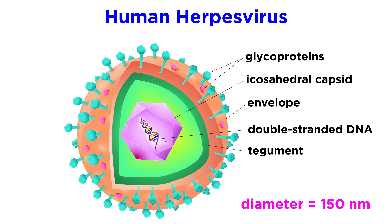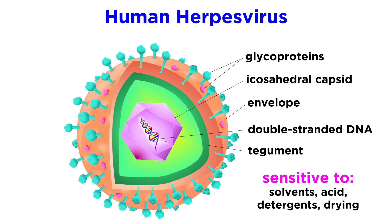With all of these parts, it makes sense that human herpes viruses are on the larger side as far as viruses go, typically spanning about 150 nanometers in diameter. However, like other enveloped viruses, human herpes viruses are sensitive to solvents, acid, detergents, and drying.